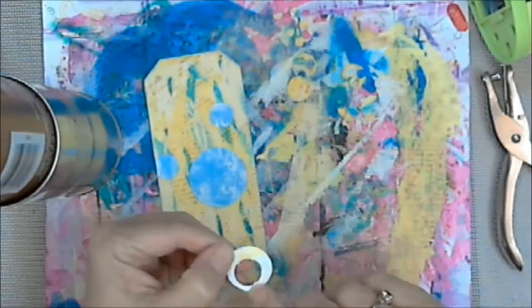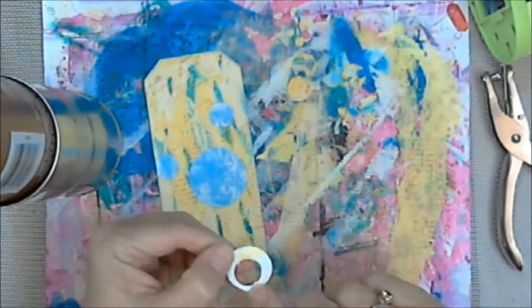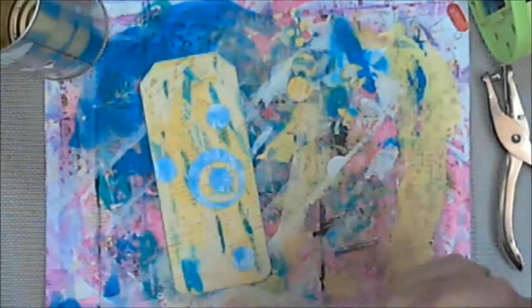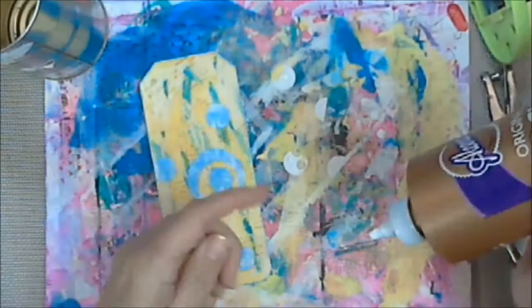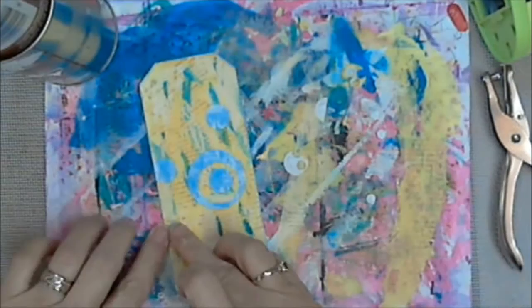Alright so now we're using some Aileen's Tacky Glue, y'all know it's one of my favorites, and I got out my gluing book. Gonna lay down my punched cardstock on top of my card. Not too bad, not too bad.